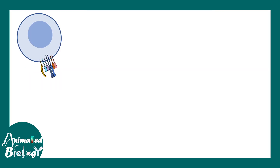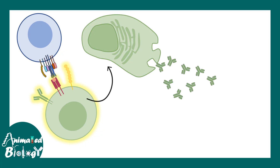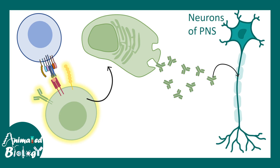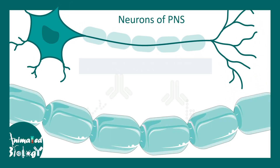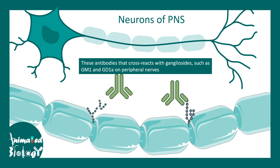The T helper cell also activates B cells, which generate antibodies against the particular antigens presented. These antibodies can eventually attack the myelin sheath of peripheral neurons. In the peripheral nervous system, neurons display specific lipid antigens on their membrane, such as gangliosides GM1 and GD1, which are enriched in the peripheral nervous system. The antibodies can cross-react with these gangliosides — this is an example of molecular mimicry.